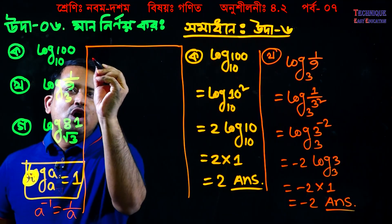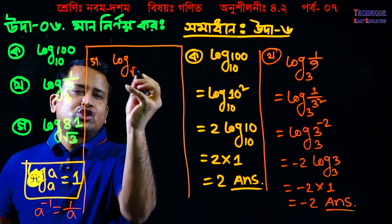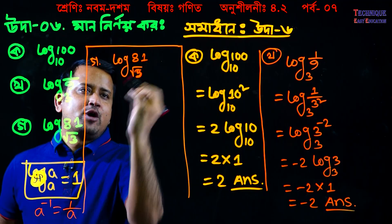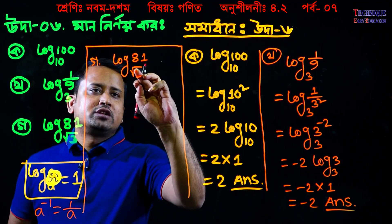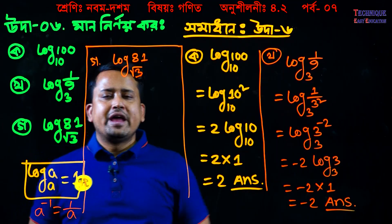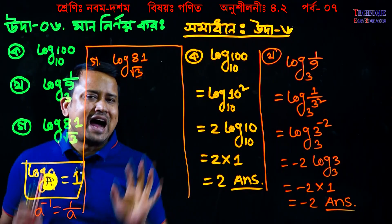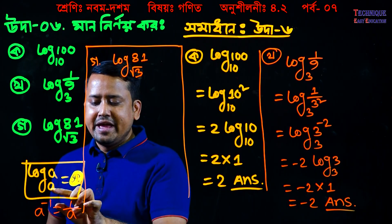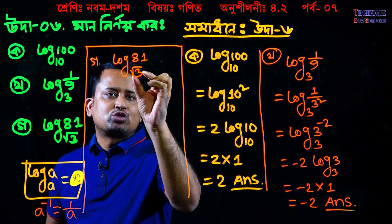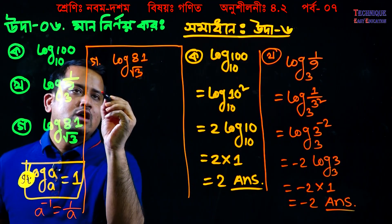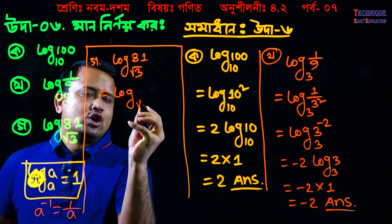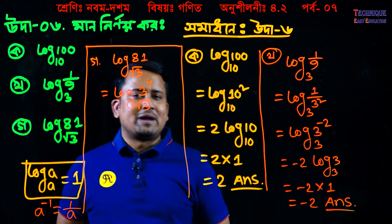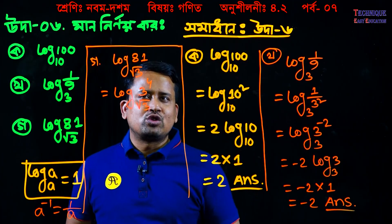So we have log root 3 base — sorry, root 3 base 81. This way we write root 3, which is 3 to the same thing. The base is root 3. We make root 3. We write 81 as 3 to the power 4. So log root 3 of 81 becomes log root 3 of 3 to the power 4.